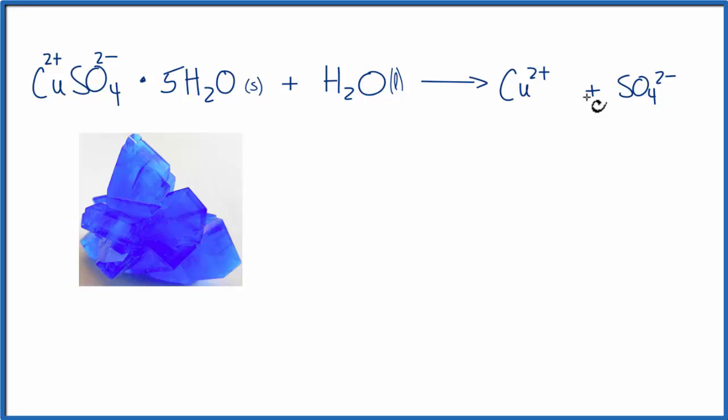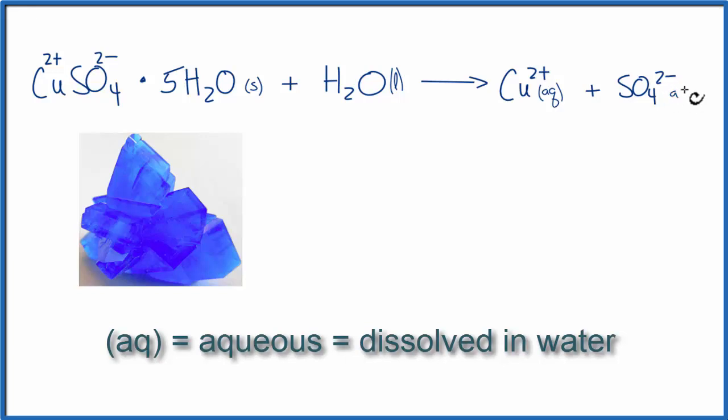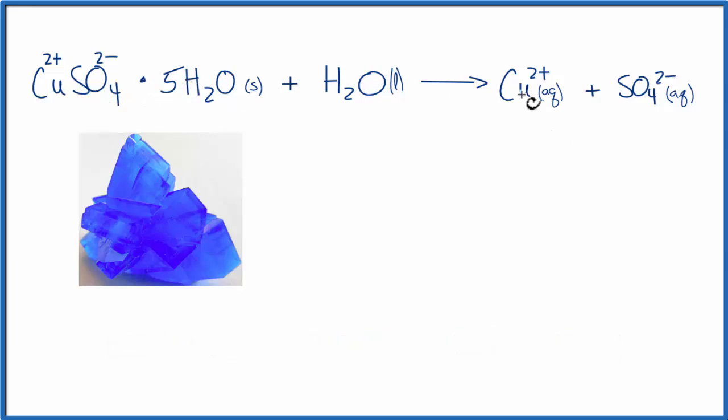Both of these are dissolved in water. They've dissociated, they've dissolved. So we just write AQ, aqueous. That means they're dissolved in water. Because of that, we don't need to write water again on this side of the equation. Aqueous means dissolved in water. So this is how we would write the equation for when copper sulfate pentahydrate is dissolved in water.